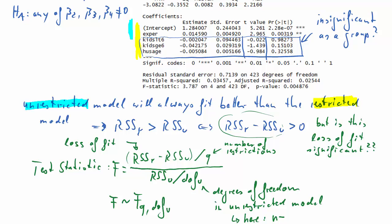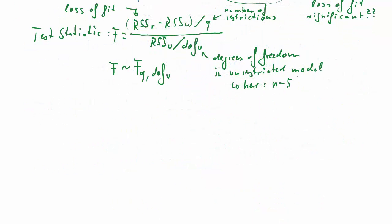So there are two sets of degrees of freedom for this test statistic. Here, the DF_U is actually N, the number of observations, minus the number of coefficients in the unrestricted model, and they were five. Five coefficients estimated.